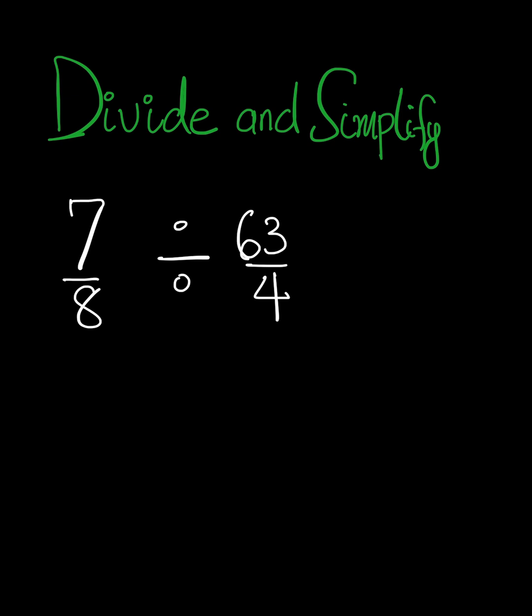The fraction we have is 7 over 8 divided by 63 over 4. In our previous videos, we learned how to add and subtract fractions, which is similar. But it's a little trickier when you want to divide fractions. What do we do here?